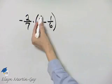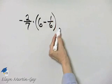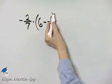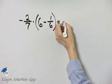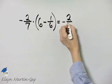Because this subtraction is within this set of parenthesis, I perform it first. So this is negative 2/7.